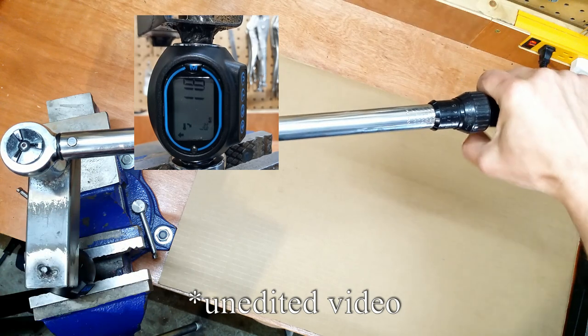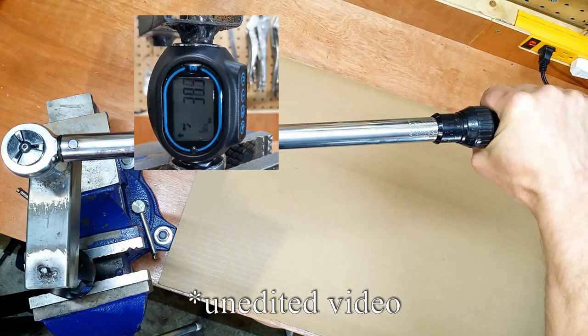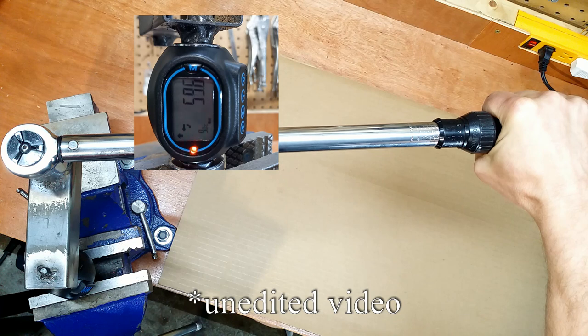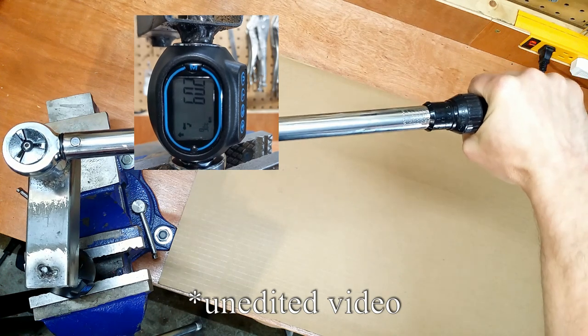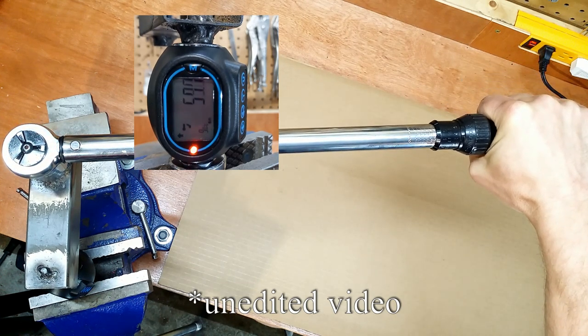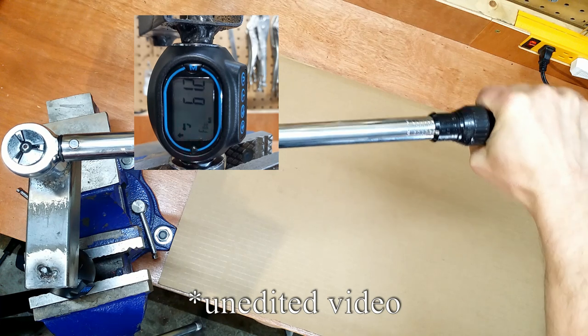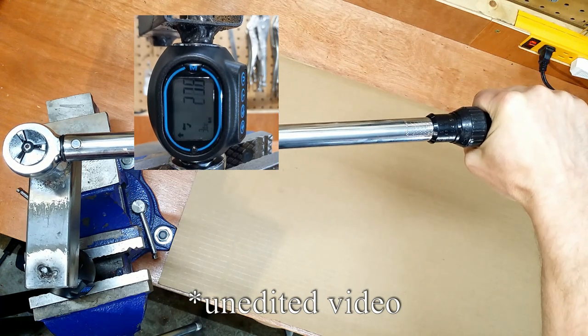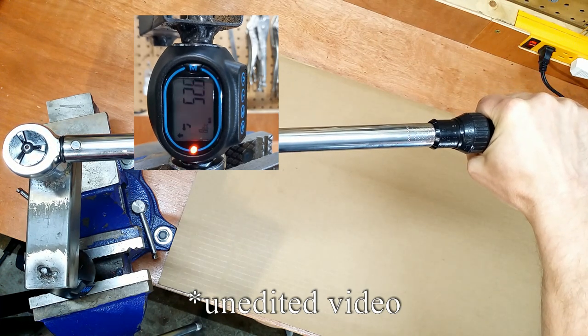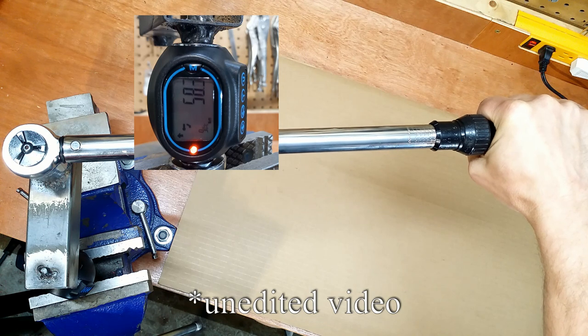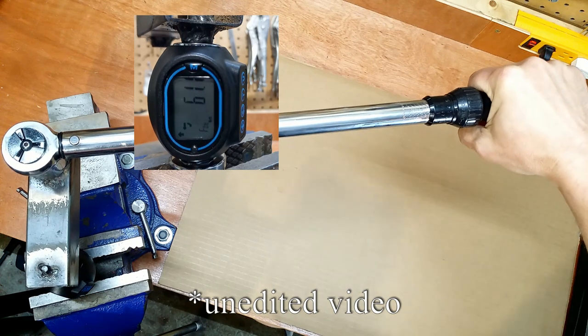With this torque wrench accuracy of 4% we are close enough reading 60.2, 61.2 and 61.1.